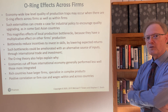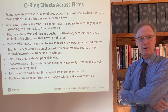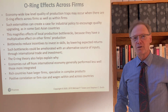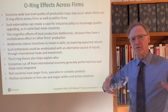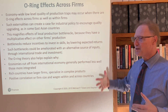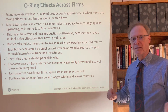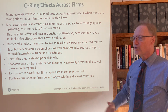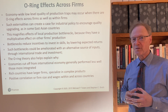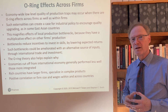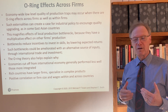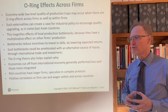There can also be O-ring effects across firms. Economy-wide low-level quality-of-production traps can occur when firms are interacting and there are O-ring effects in the interaction among firms as well as within firms. This kind of externality can create a case for industrial policy or industrialization strategy to encourage quality upgrading. We saw something like this in a number of East Asian countries — such as Korea, touched on in the case study at the end of chapter three and much more in chapter twelve — and in China, examined in the case study at the end of chapter four.